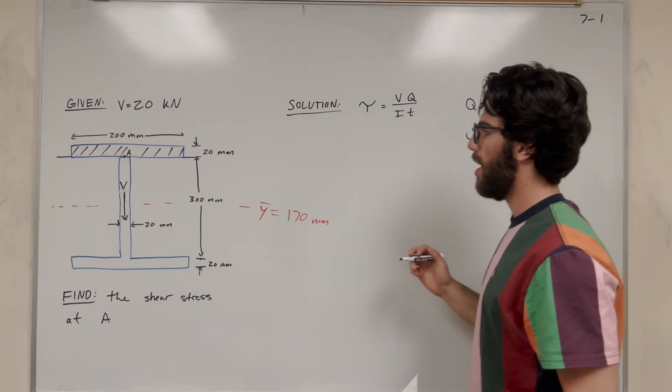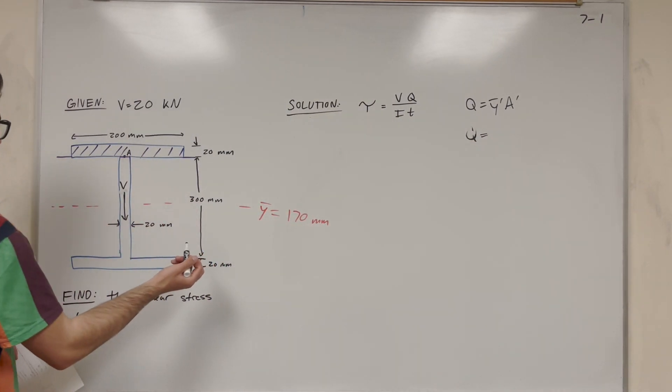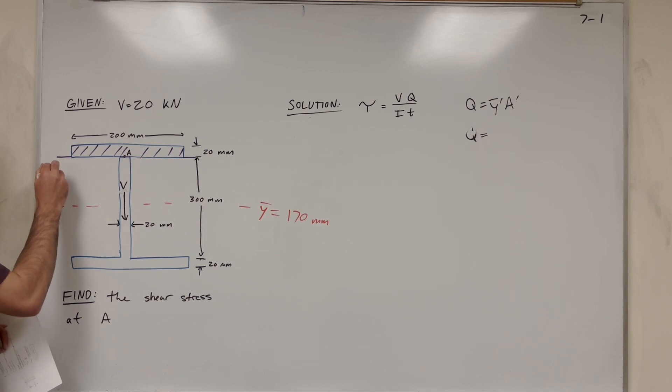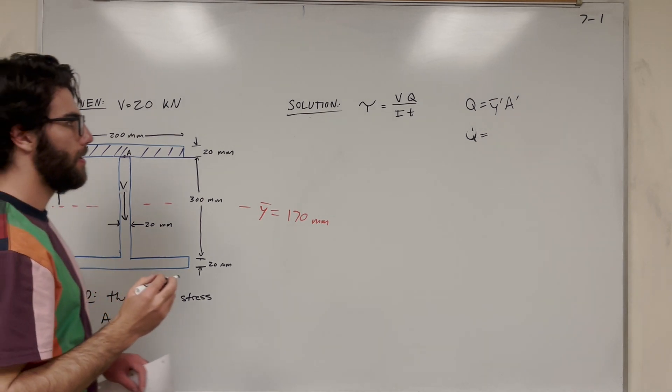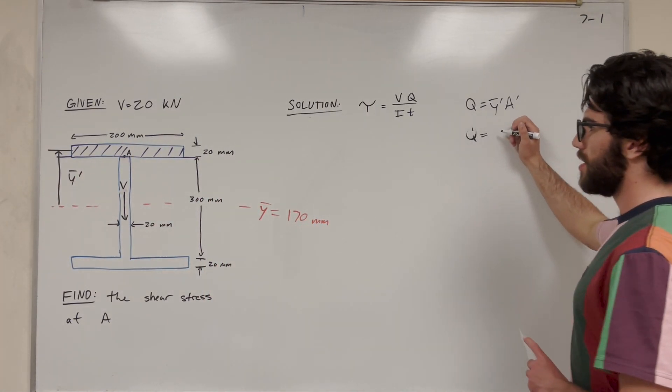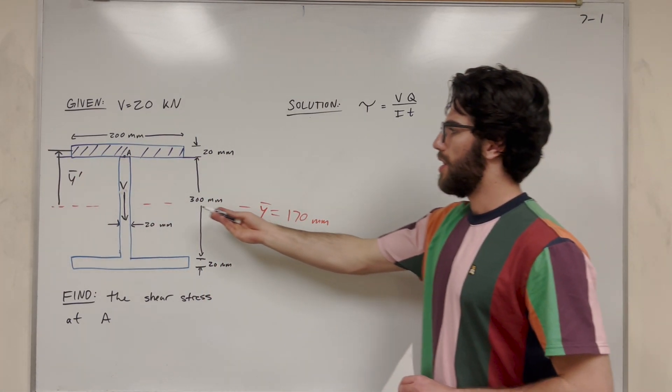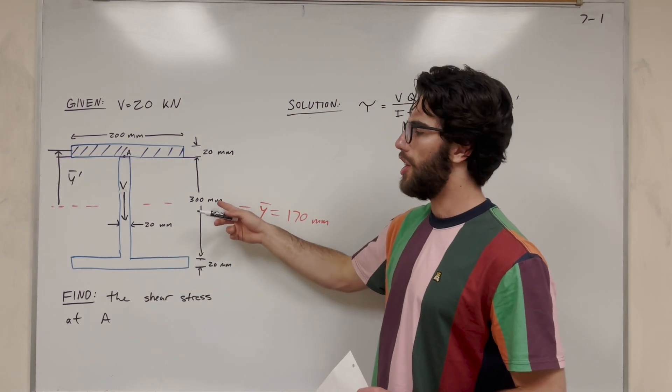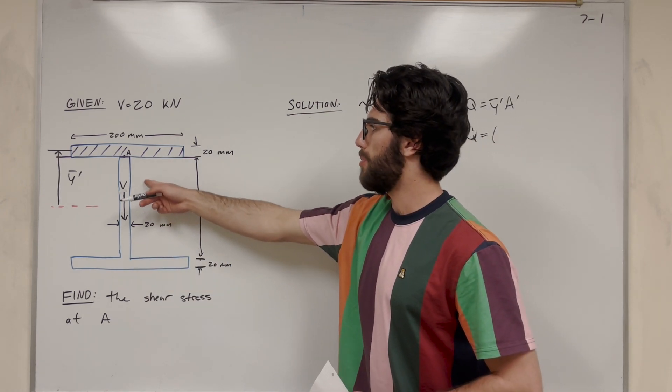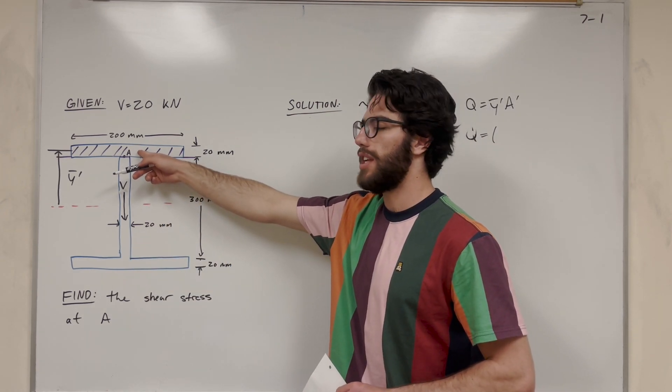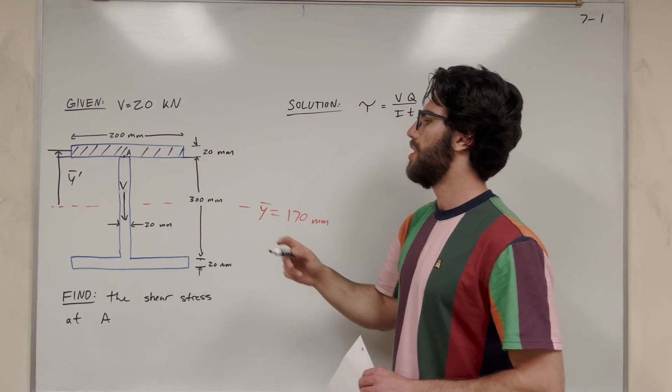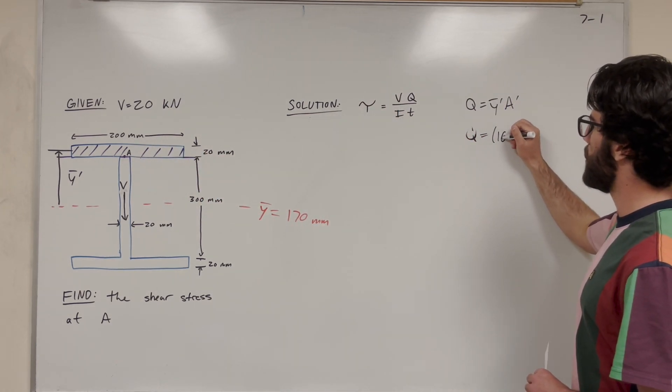So what is Y bar prime? Well, Y bar prime is going to be the distance from here to the center of mass, which is going to be half of this rectangle. This rectangle here, half of it is 150 millimeters. So we're going to go up to half of that, and then to get the center of mass of this, it's going to be half of 20. So it's going to be 160 millimeters.